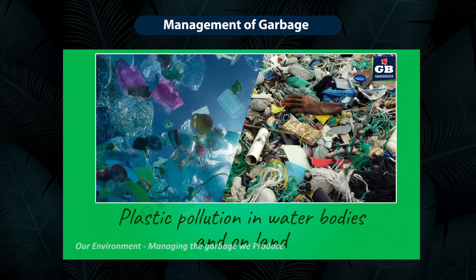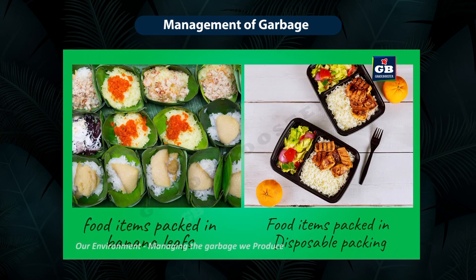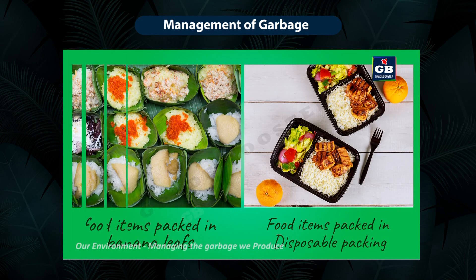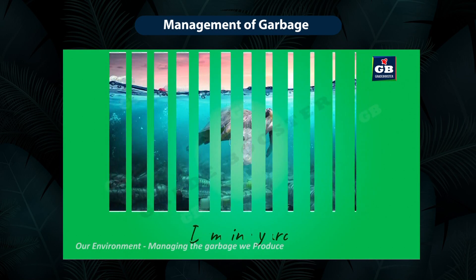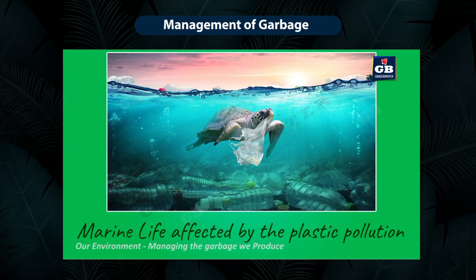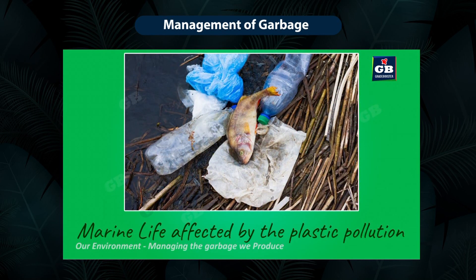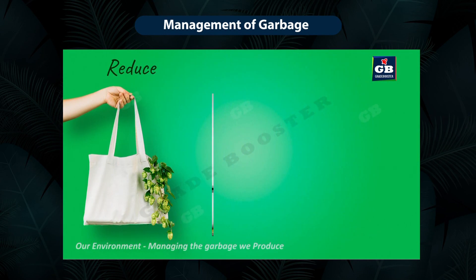Disposable plates, spoons, cups, polythene covers, plastic bottles, synthetic clothes, and glass — all these are examples of non-biodegradable materials. Due to changes in our lifestyle, we are generating a lot of garbage. In olden days, people preferred paper, cardboard, and grass-based items for packing. But now we are using synthetic materials like plastic and polythene for packing purposes. Day by day the usage of non-biodegradable materials is increasing, which leads to so many environmental problems.